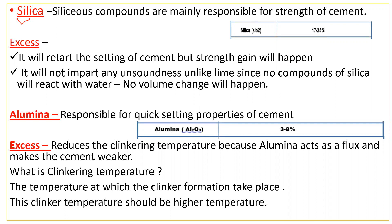Siliceous compounds are mainly responsible for the strength of cement, and we also saw that the percentage of silica should be in between 17 to 25 percent.